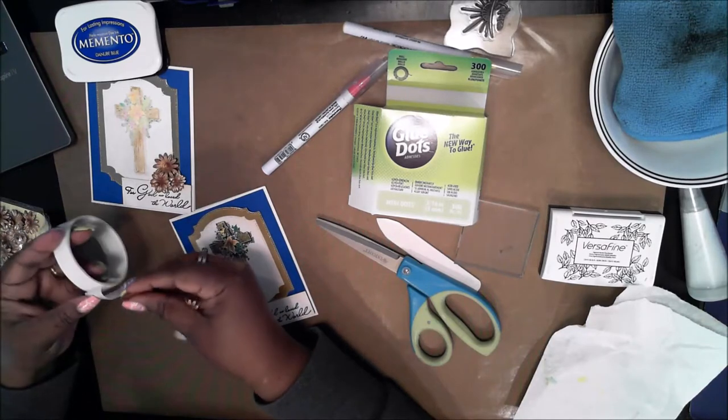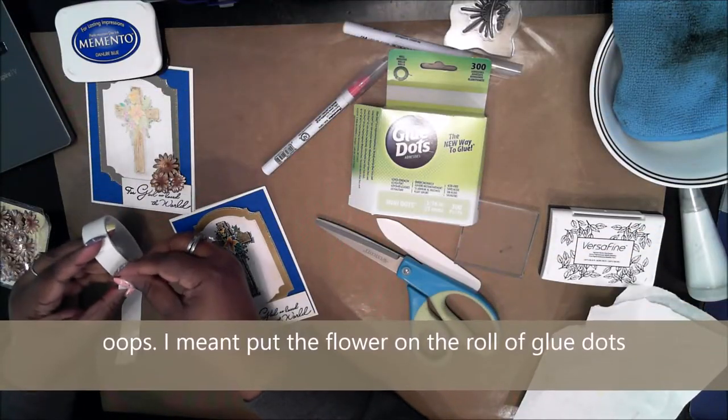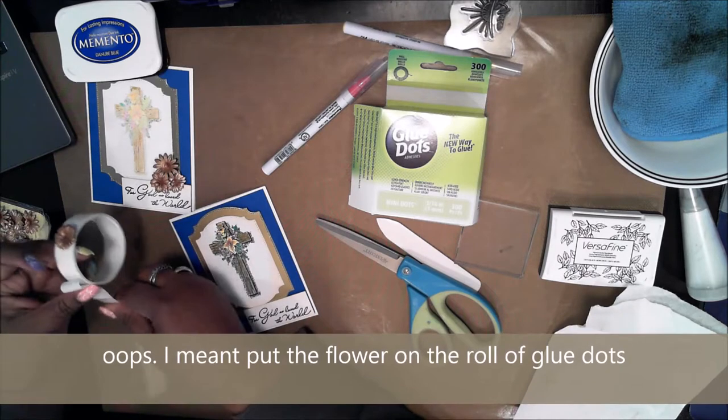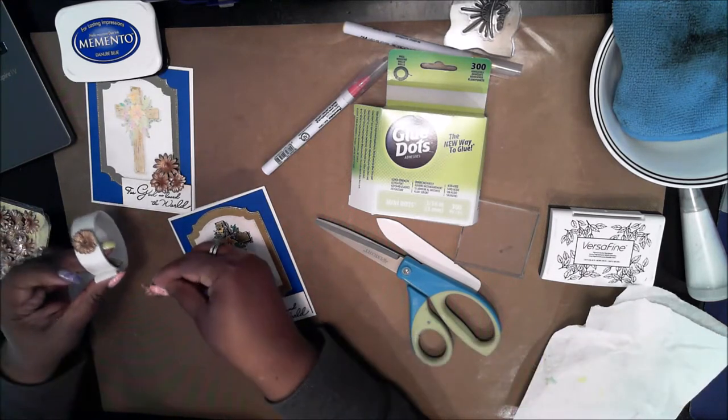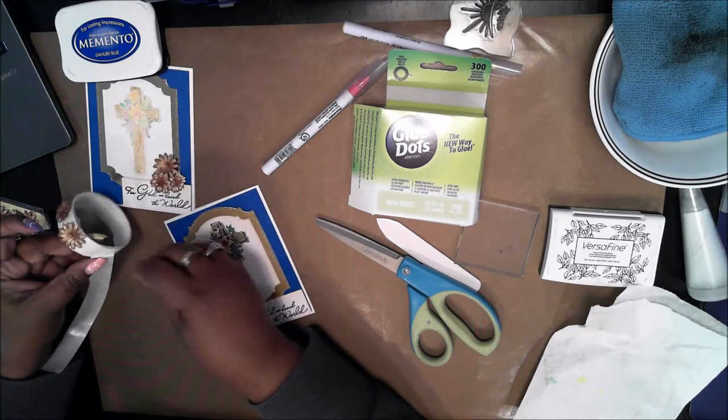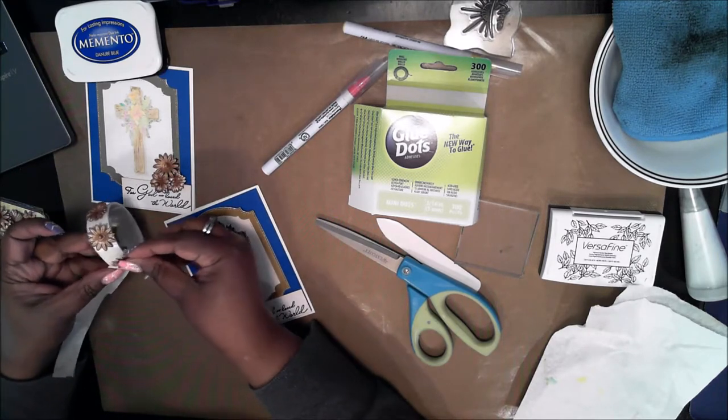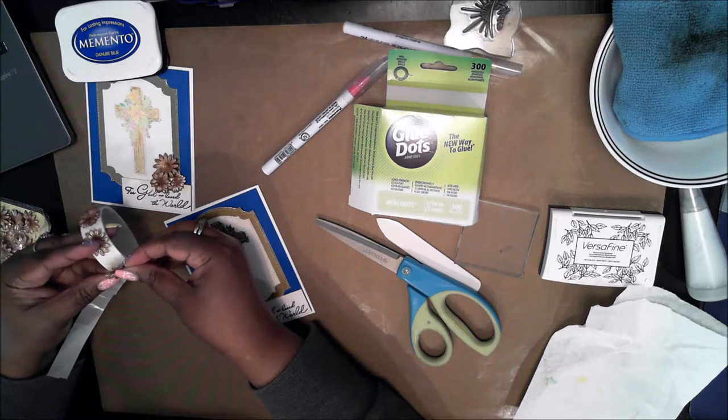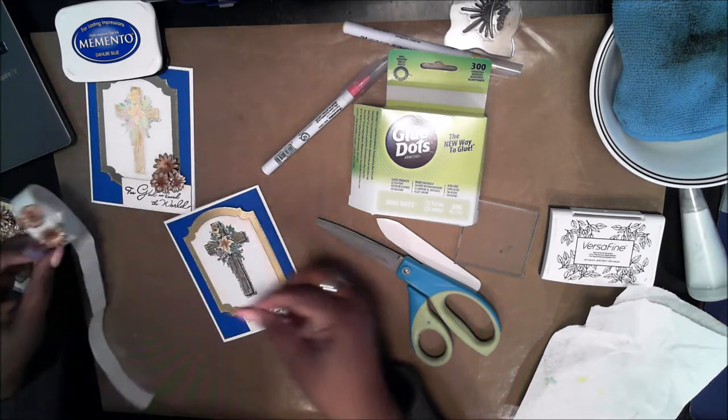I just take the glue dot and put it on the roll and then take it off and put it in place.